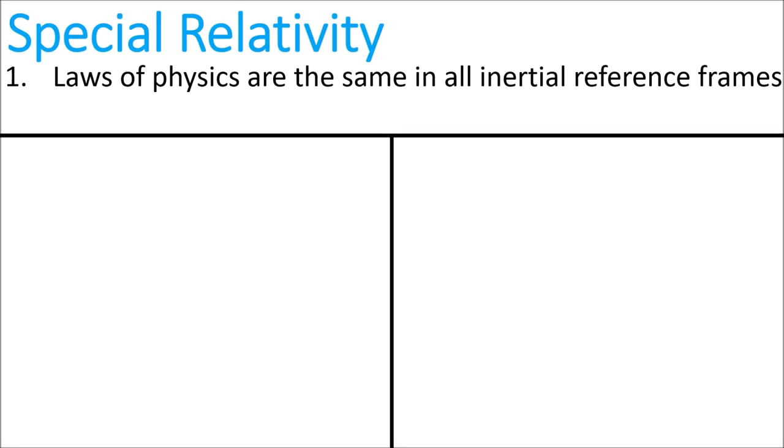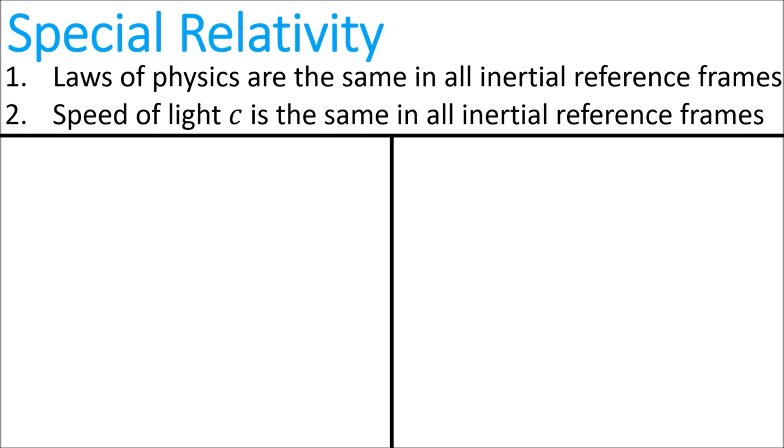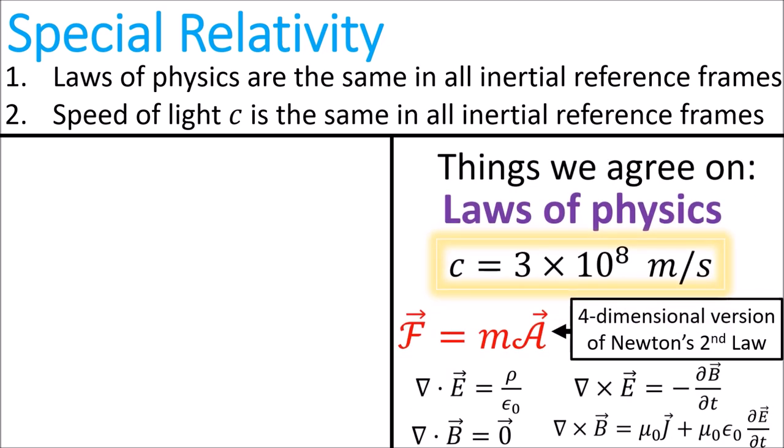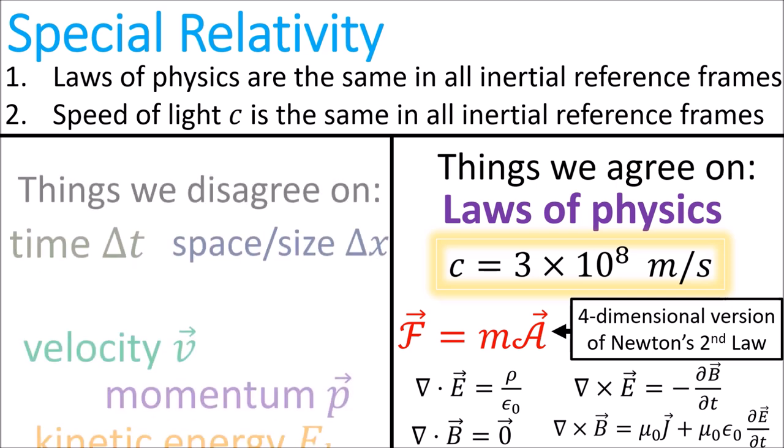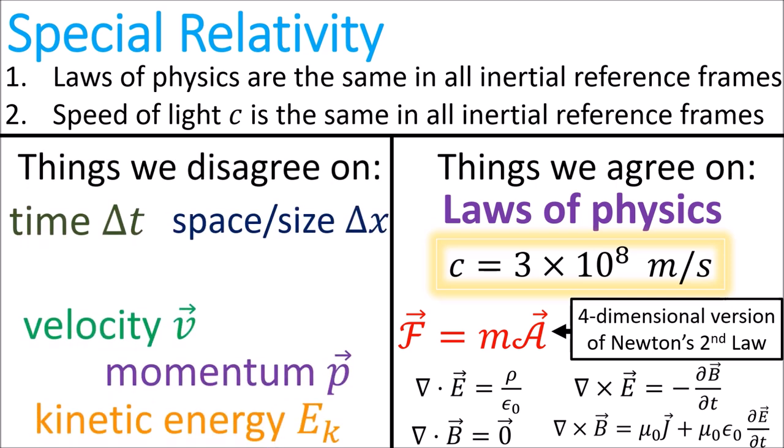So to sum up special relativity, the two postulates are that all laws of physics are the same in all inertial reference frames, and the speed of light in a vacuum c is also a law of physics that is the same in all inertial reference frames. This means that all inertial reference frames will agree on Newton's laws, Maxwell's equations, and the speed of light. But different inertial reference frames will disagree on time and space, as well as velocity, momentum, and kinetic energy.